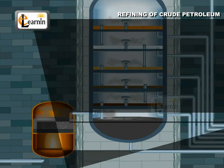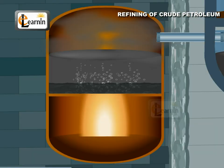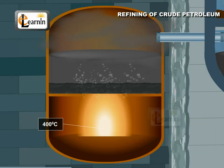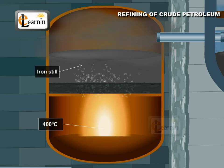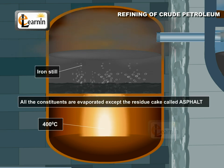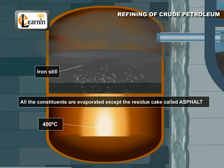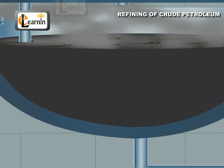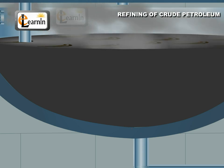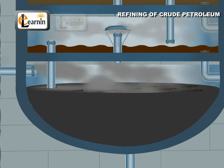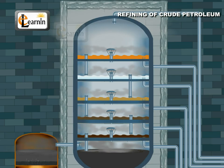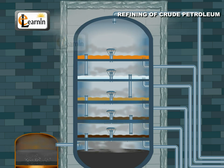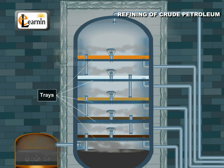Fractionation. The crude oil is heated up to 400 degrees Celsius in an iron still. All the constituents are evaporated except for the residue called asphalt. The vapor is passed through the fractionalization column, which is a tall, cylindrical tower. It contains a number of horizontal stainless steel trays.